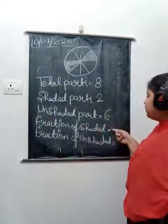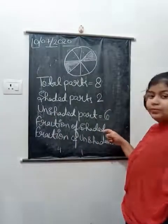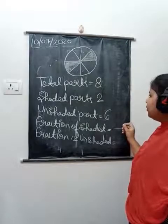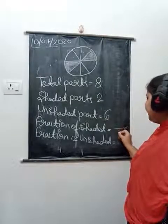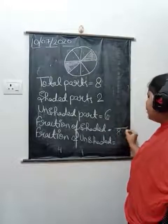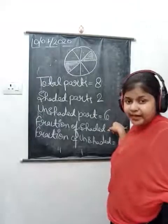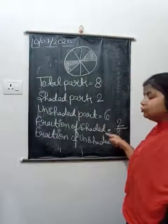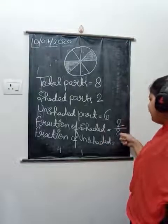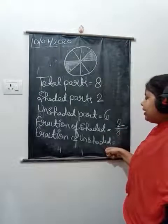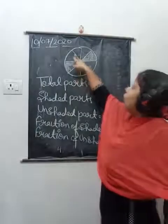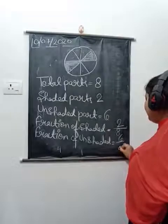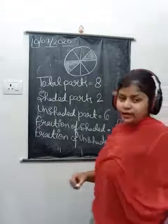Fraction of shaded parts - total parts are eight, so denominator is eight. Two parts are shaded so numerator is two - fraction of shaded part is two upon eight. Unshaded parts are six, so fraction of unshaded part is six upon eight.